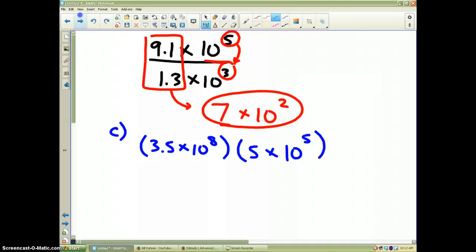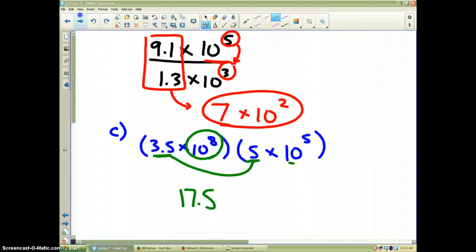All right. I know that these two numbers right here are the coefficients. I'm going to multiply those two together, and I actually get 17.5. What I'm circling—10 to the eighth and 10 to the fifth—those are your bases and your powers. So I'm going to write times 10, and if I add the powers, I get times 10 to the thirteenth.